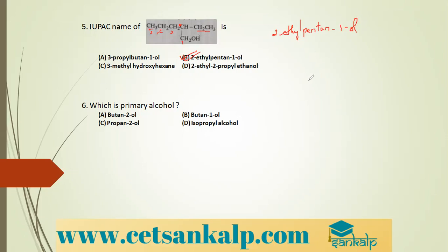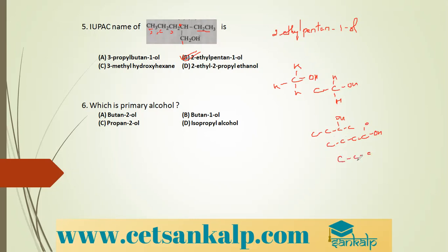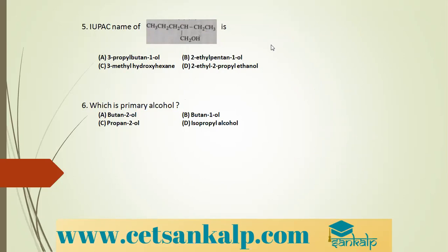A primary alcohol has the OH group attached to a carbon bonded to only one other carbon. Butan-2-ol has its carbon attached to two carbons — it is secondary. Propan-2-ol (isopropyl alcohol) is also secondary. Butan-1-ol has OH on a carbon attached to only one carbon, so butan-1-ol is the correct primary alcohol.